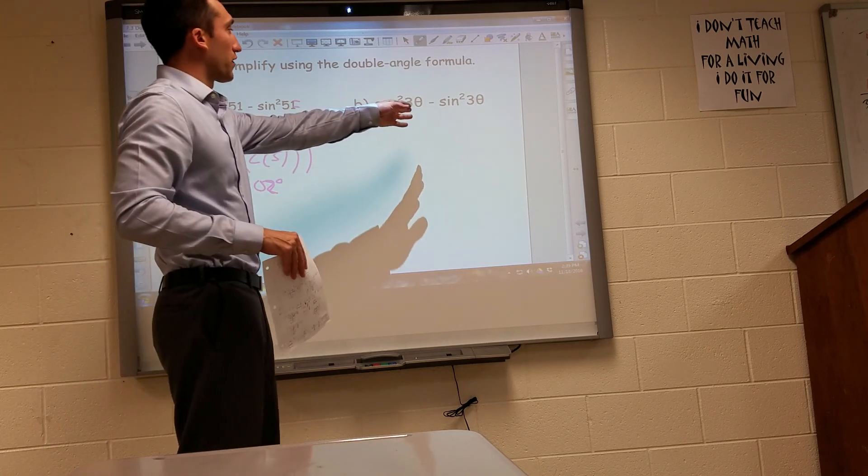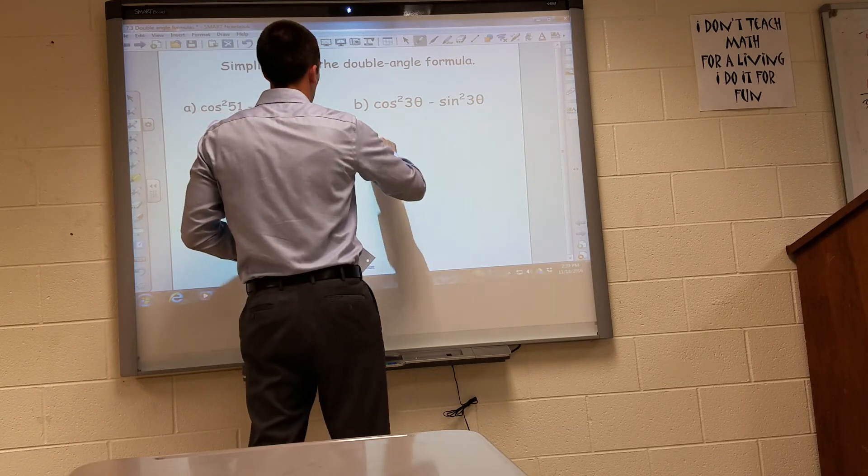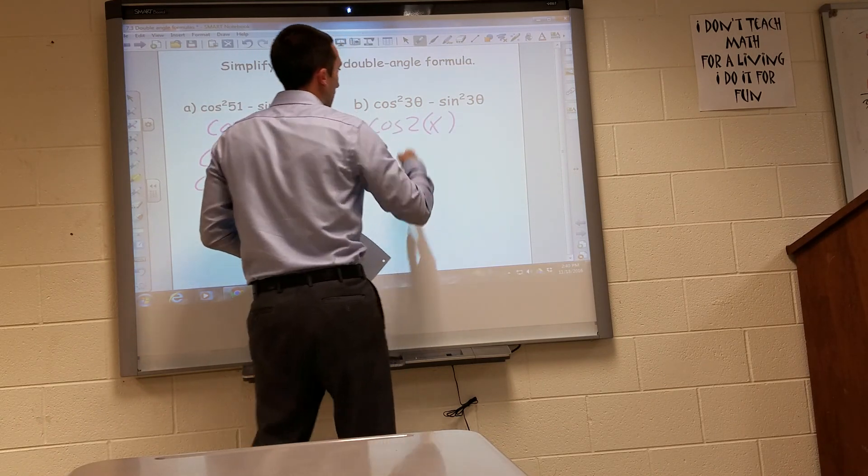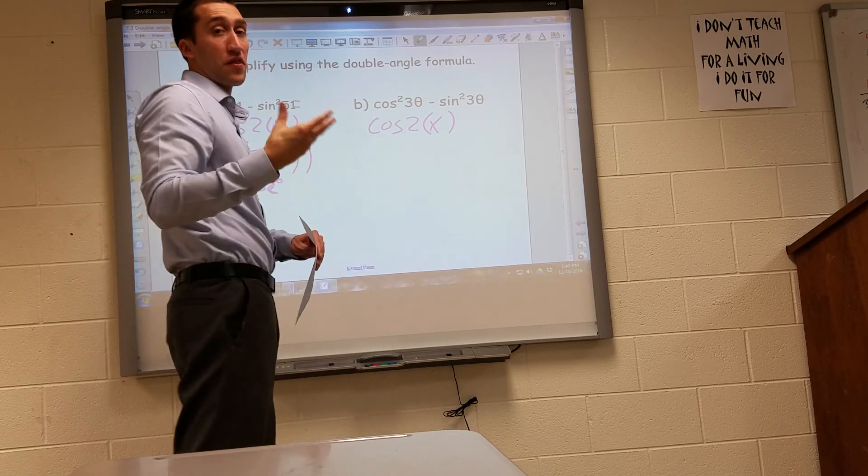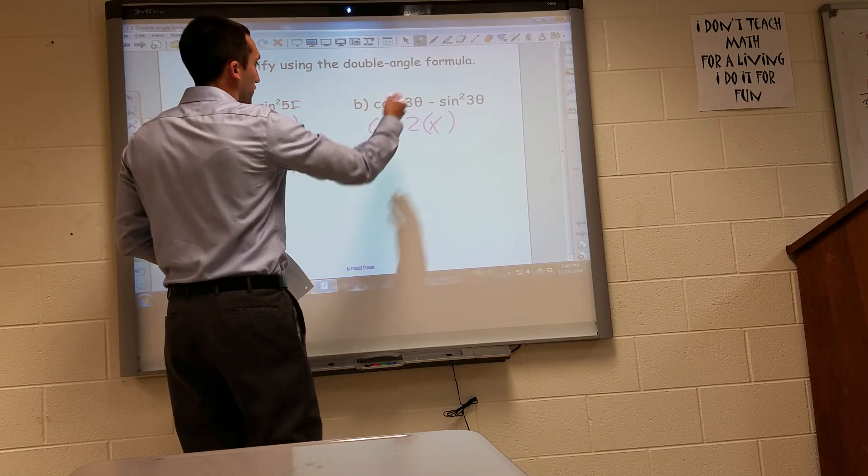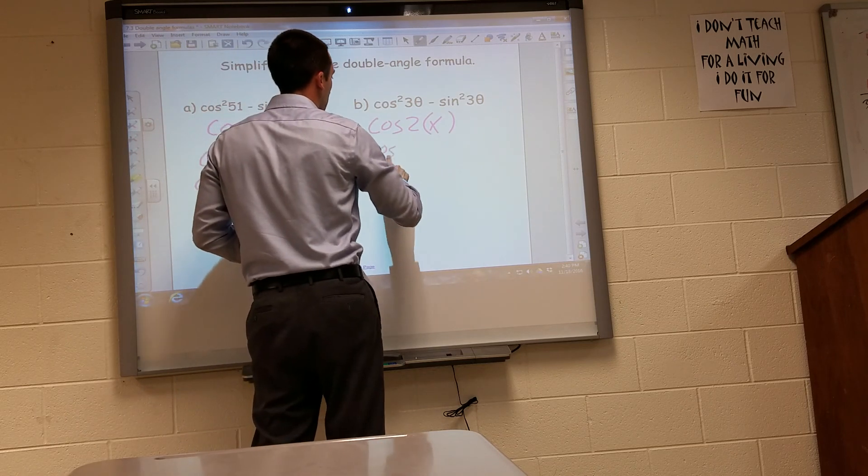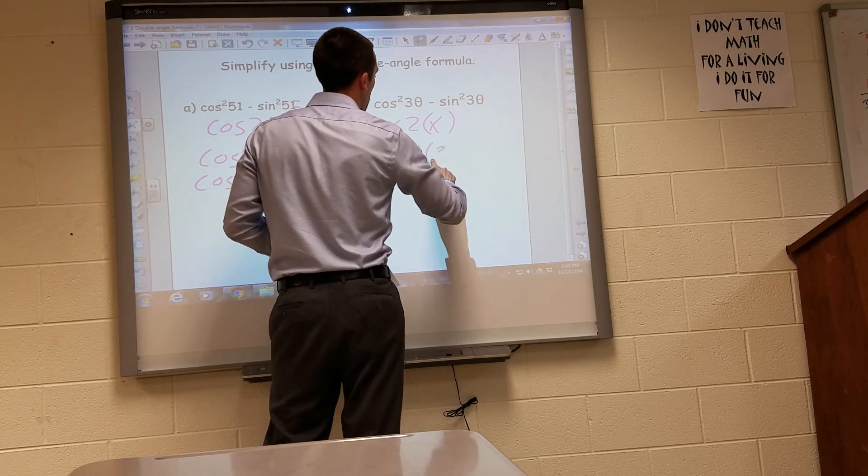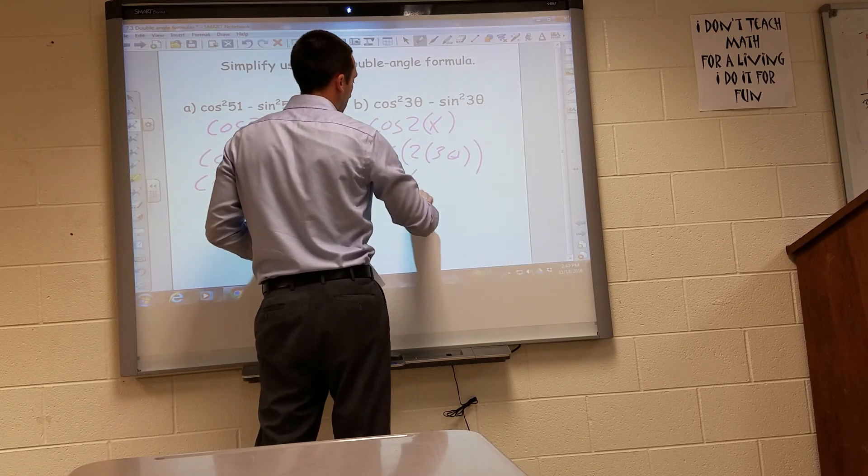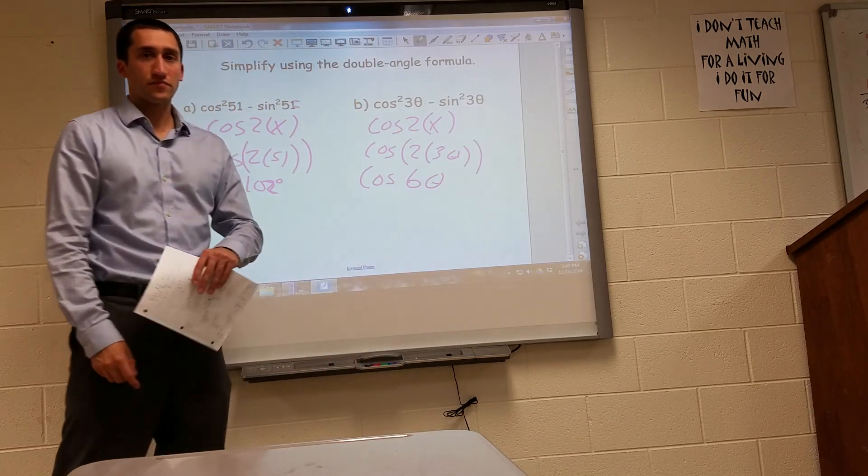And I'll do the same thing over here. I know that this is cosine of 2 times x. In this case, I know my x to be 3 theta, so 3 times whatever that angle may be. So I'll just go ahead and plug that straight in, and I get cosine of 2 times 3 theta. So that's cosine of 6 theta.